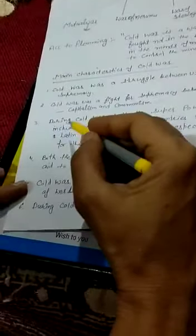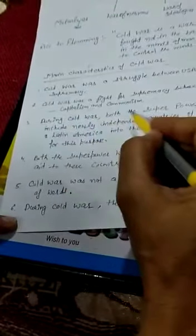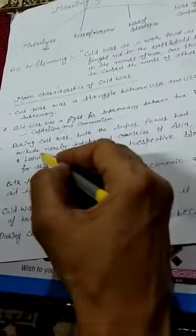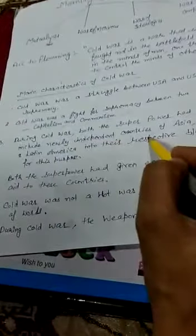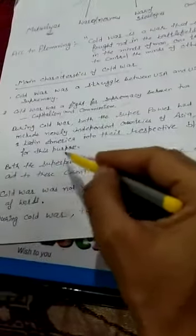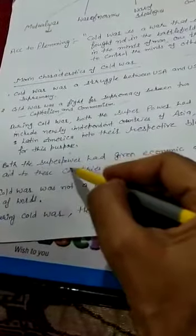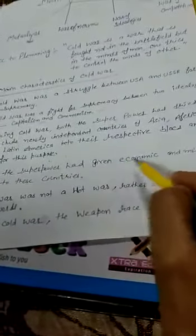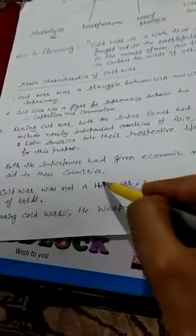Third, during Cold War, both superpowers tried to include newly independent countries of Asia, Africa and Latin America into their respective blocs. For this purpose, both superpowers gave economic and military aid to these countries.